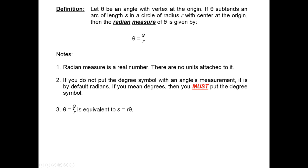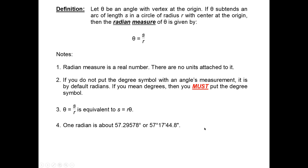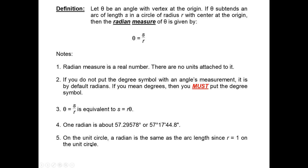θ = s/r is equivalent to s = rθ. The preferred form is s = rθ, where s is arc length, r is radius, and θ is the angle measured in radians. One radian is about 57.296 degrees or 57 degrees, 17 minutes, 44.8 seconds. On the unit circle, the radian measure equals the arc length since r = 1 — if r is 1, s equals θ. That's the advantage of the unit circle.